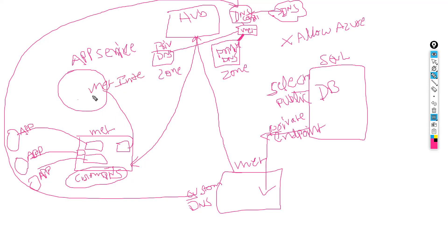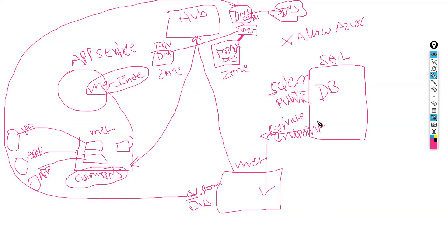VNet integration is performed between the App Service and the VNet — not a private endpoint. The SQL database has a private endpoint. But since this VNet has no custom DNS, even though it is peered with the hub network, the App Service cannot communicate with the database. Internal traffic is not flowing as expected.